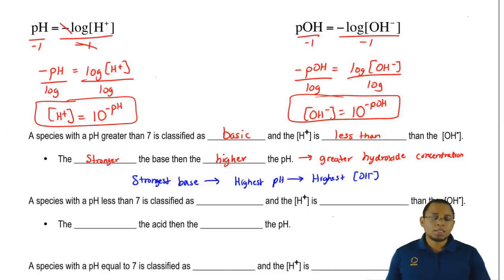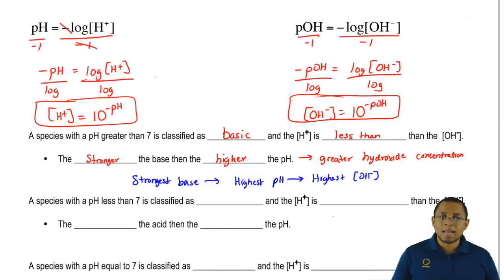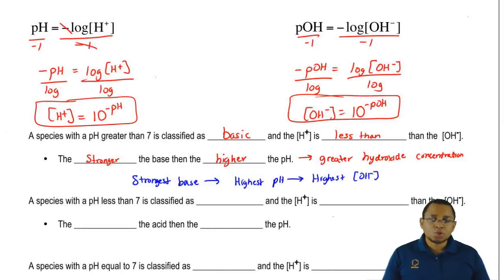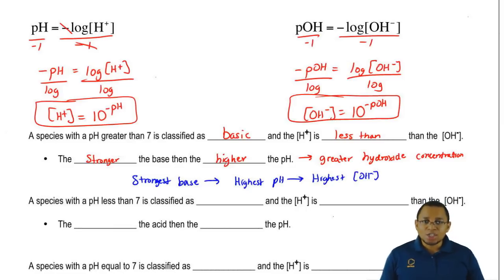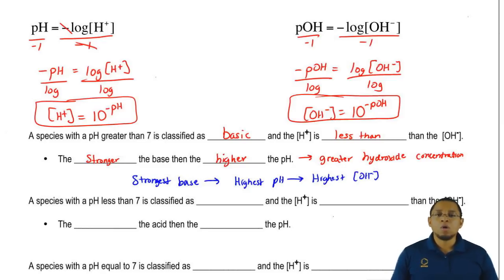Remember, we already went over this several videos ago — how do we determine if something is weak or strong? You still need to know those in order to do the following questions. Why do we need to know the strength of things? Because eventually we're going to have to use ICE charts to find pH if we're given a weak acid or a weak base. That's why it's important to know what our species is — is it weak or is it strong?